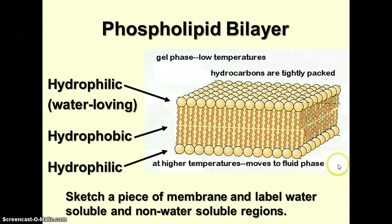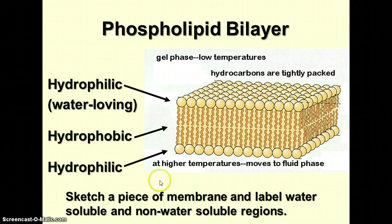Be sure to sketch a piece of the membrane — just about six or eight pairs of phospholipids — and label the hydrophilic and hydrophobic layers of the cell membrane.